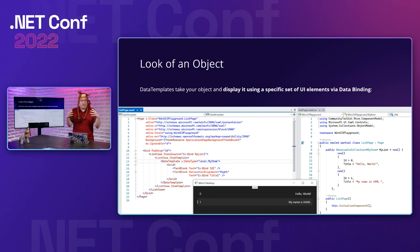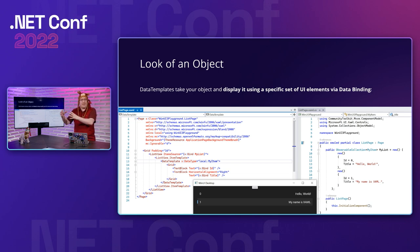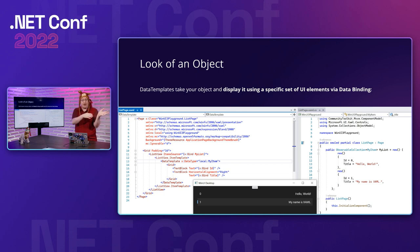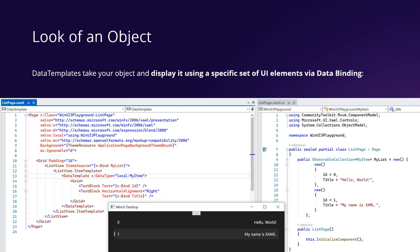We also use data templates in XAML, which you see a lot with lists. This is how we take an object and translate it into UI. Rather than creating a bunch of UI in code-behind or adjusting data to fit UI concepts, we separate those concerns. The data template says 'this is what my item looks like' — I create two text boxes to display it and bind to the ID and title properties. For each item in the list, XAML automatically knows how to translate that item into usable UI.